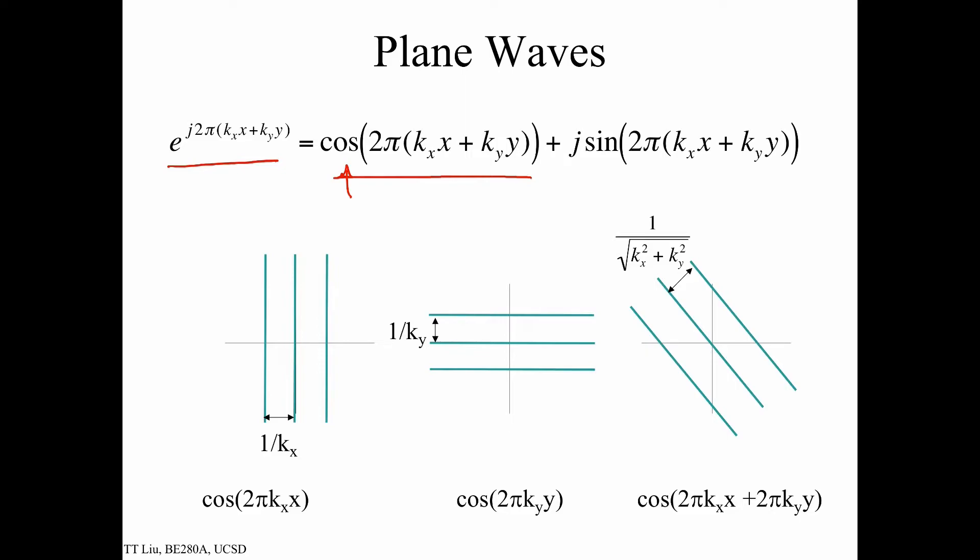So if I only have the kx part of it, so then in this case I have cosine 2π kx·x, this is now just a function that varies with x. It's a function of both x and y, but it only shows variation in the x direction, such that the period of this cosine is 1 over kx.